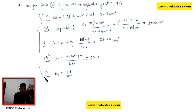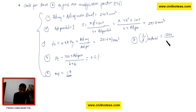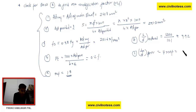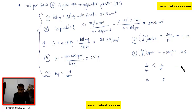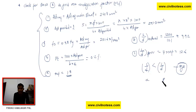Next, we determine the L/D actual ratio and the L/D permissible ratio. The L/D actual = span / effective depth = 9.92. The L/D permissible = 7 × MF = 7 × 1.8 = 12.6. Since L/D actual (9.92) is less than L/D permissible (12.6), the design is safe in deflection check.